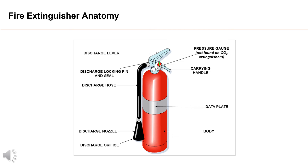The hose allows to direct the flow of the extinguishing agent. It is a flexible pipe and can only be found on fire extinguishers that are heavier than 3 kg. The extinguishing agent is a substance that limits the spreading of the fire and allows for its extinction when it comes into contact with it. The propellant is a gas whose function is to expel the extinguishing agent from the fire extinguisher.